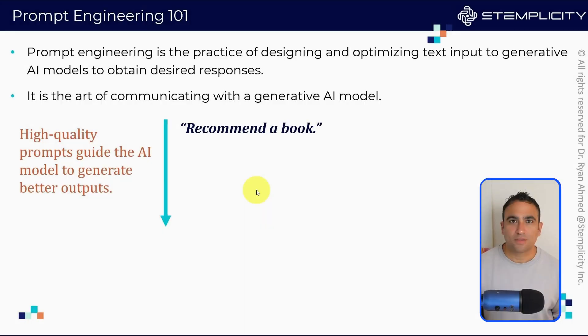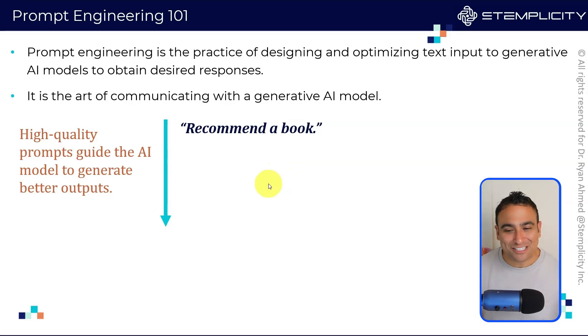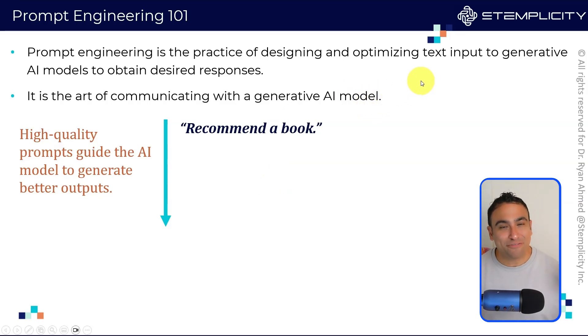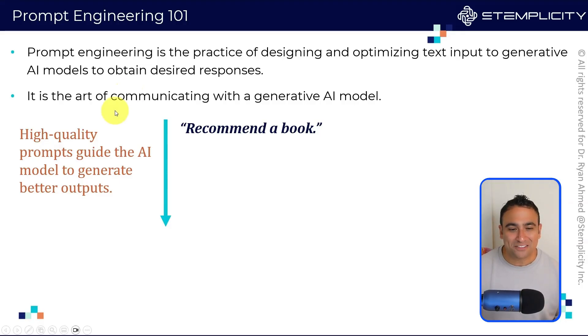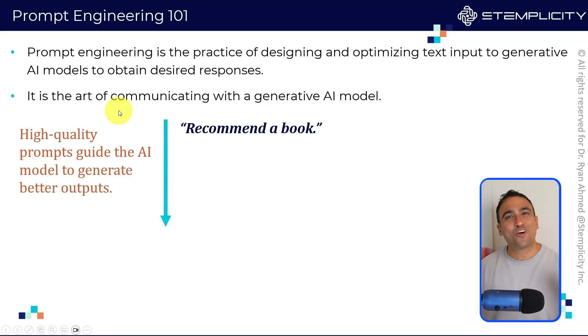Prompt engineering is about shaping your words so the AI gives you exactly what you need, faster and smarter. Prompt engineering is the practice of designing and optimizing text input to generative AI models like ChatGPT or Copilot to achieve a desired response. Think of it as the art of communicating and talking to AI.